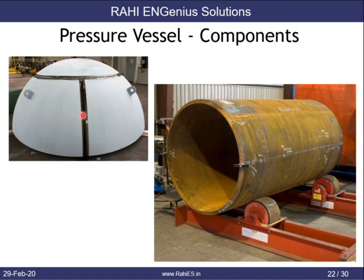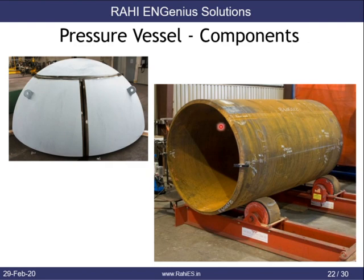Based on size and forming capacity, a spherical head can be made in a single piece or multiple pieces. When made in multiple pieces, the pieces are called petals and the central piece is called the crown — so it is called crown-and-petal construction. Cylinders rolled from a plate are welded with a longitudinal joint called the long seam.